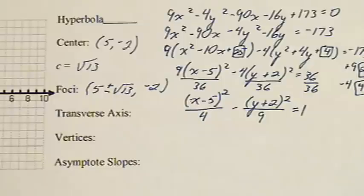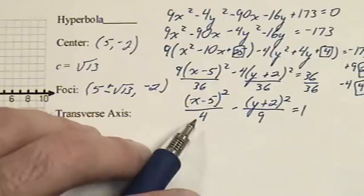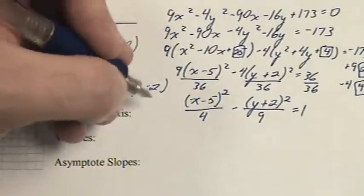The transverse axis is simply a fancy way of saying a. 4 is a squared. a is 2.